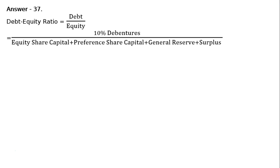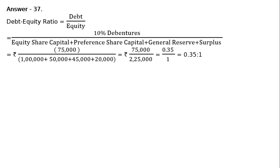For equity, it is equity share capital plus preference share capital plus general reserve plus reserves and surplus. Reserves and surplus is general reserve plus surplus, where surplus is the balance in the statement of profit and loss. The values are: rupees 75,000 divided by rupees 1 lakh plus rupees 50,000 plus rupees 45,000 plus rupees 20,000.